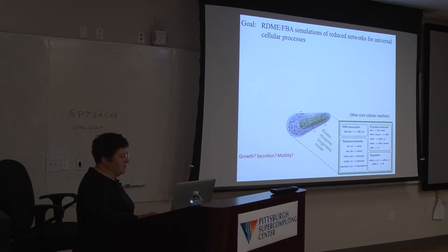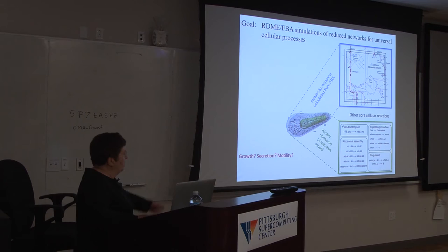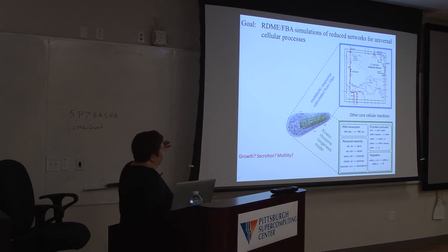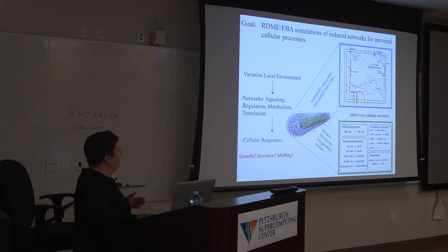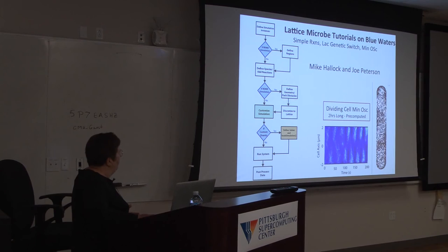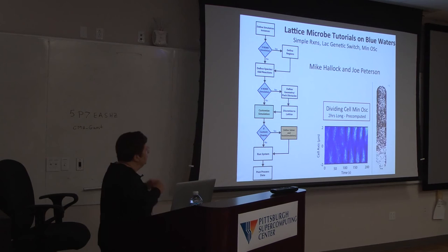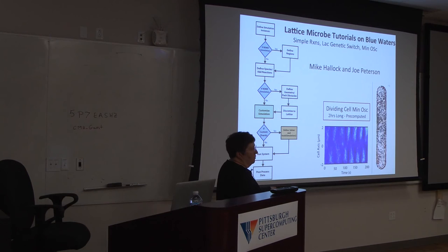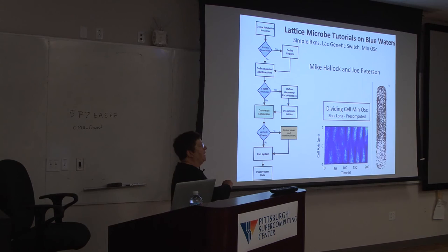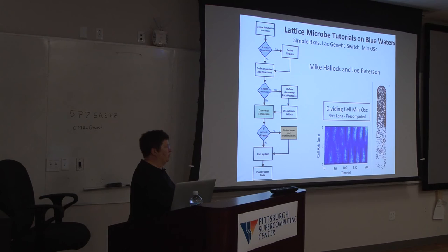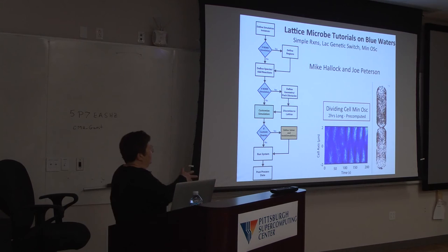Our goal is to put in reduced networks for all the cellular processes — all transcription — and combine those two parts of the network, then look at how the local environment affects signals passed on to regulation, metabolism, and translation. We're going to run all the lattice microbe tutorials on Blue Waters. If you have the right GPU on your laptop you can try running something, but you need to run it for at least 20 minutes to see switching — one of my students ran it for a minute, it didn't switch. For good statistics, please run it on Blue Waters. You want to run as many replicates as you can — at least 100 to 1,000.